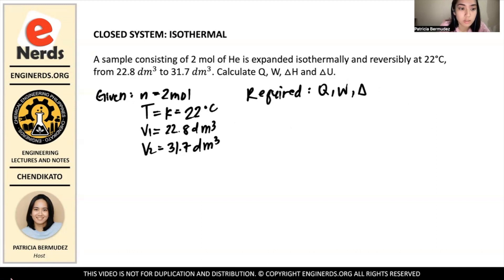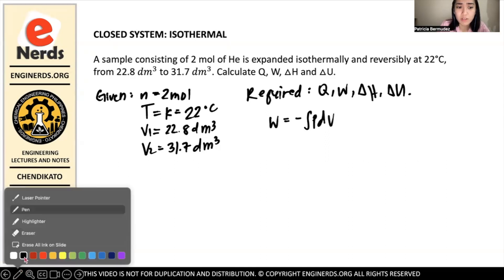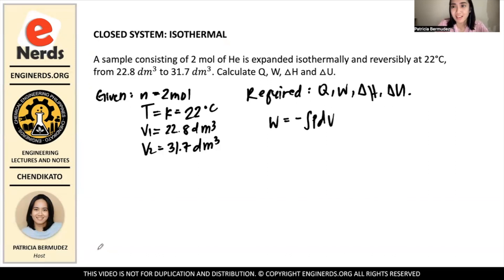Like I said earlier, the first thing I'll find is work. Work, as we know, is equals to negative the integral of p dv. But in this problem, it's not pressure that's constant, it is temperature. So we have to express p such that it'll have the constant terms. And what we'll do is use the ideal gas law. pv equals nrt.